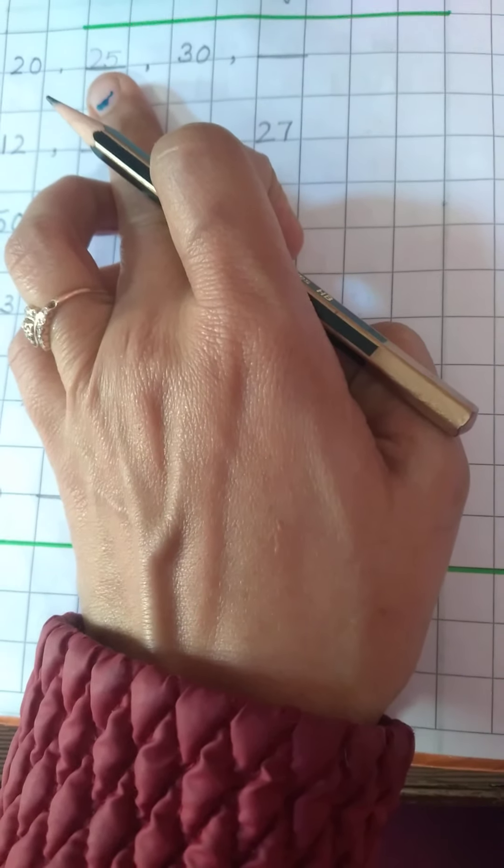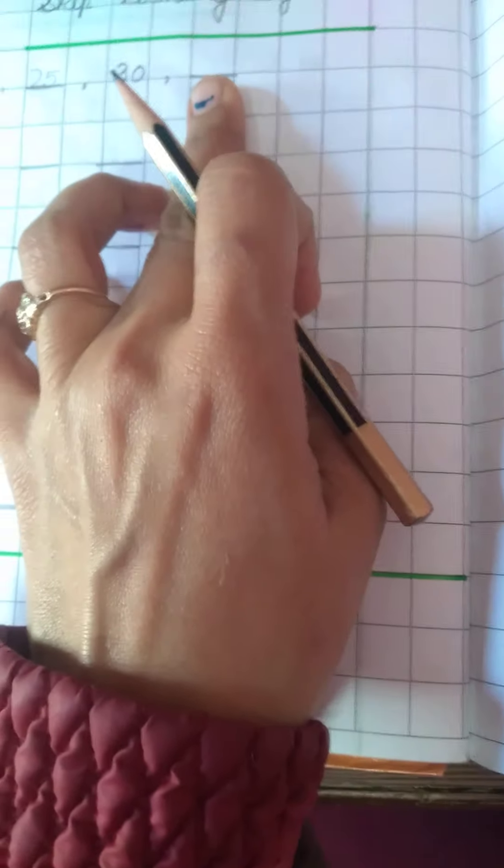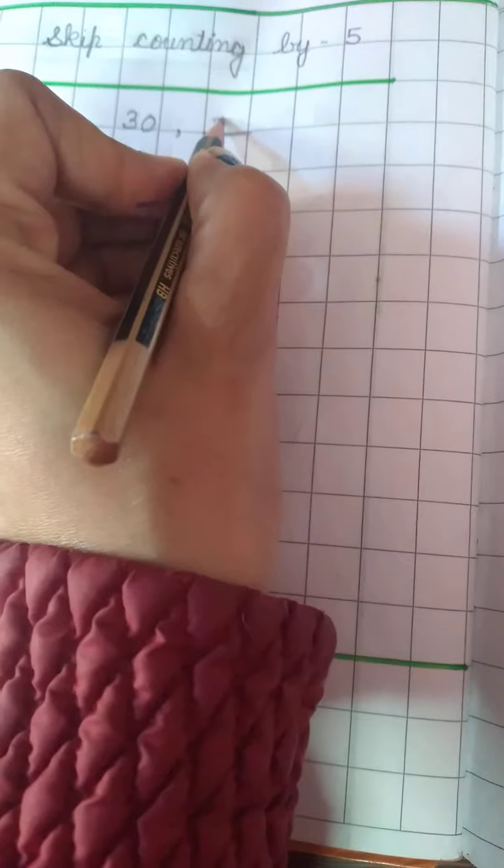And after 25 count: 26, 27, 28, 29, 30. 30 after, fifth number is, fifth number will be 35.